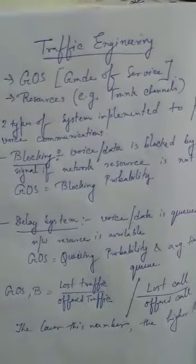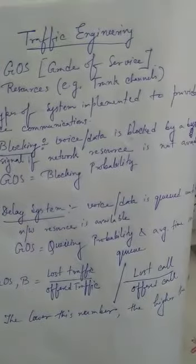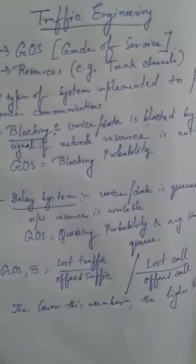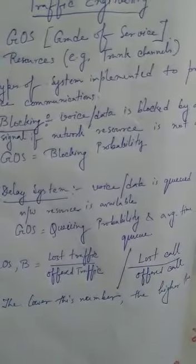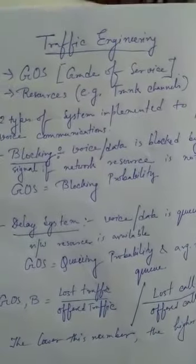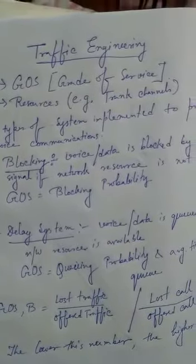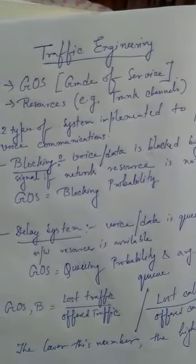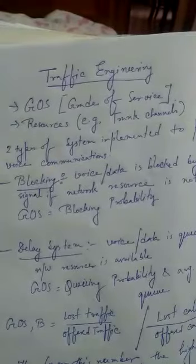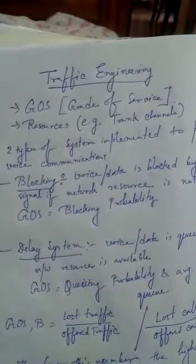GOS is denoted by the term B, and the formula is lost traffic divided by offered traffic, or lost calls divided by offered calls. GOS is a measure of the performance of a telephone system — specifically, a measure of the ability of a user to access a trunked system during the busiest hour, and an indication of the user not being able to secure a channel during the busiest hour.